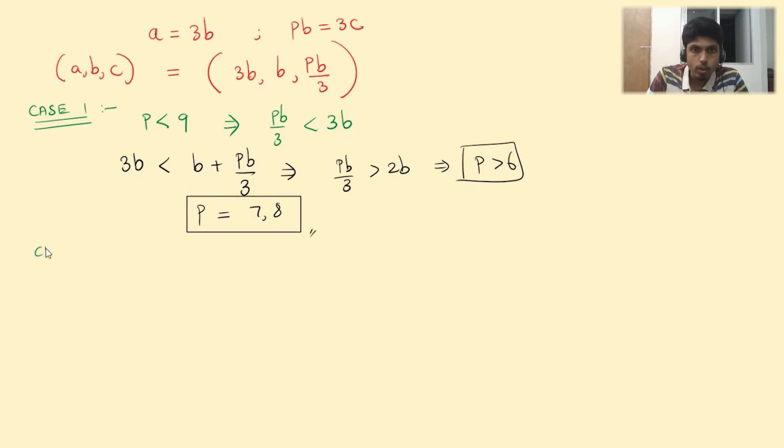Alright, moving on to case 2. Case 2 is relatively simpler. The complement of p less than 9 should be p greater than or equal to 9. So this implies pb by 3 is greater than or equal to 3b or in other words, pb by 3 is the largest side.